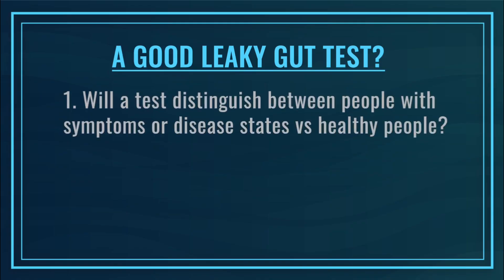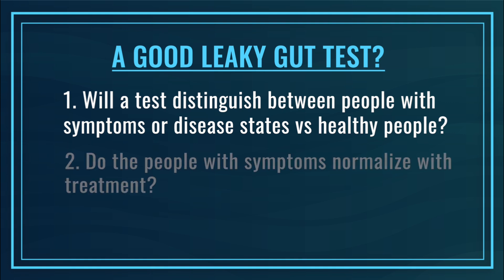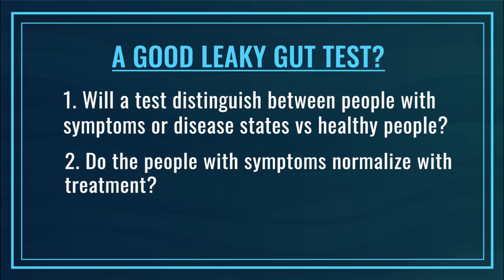As we wade into this discussion, it is important to define how we assign whether a test is accurate or not. Because sadly, just because a lab offers a test and it might look really official, it doesn't mean that due scientific investigation has been performed to confirm its accuracy. One way we look at this is: will a test distinguish between people with symptoms or disease states versus healthy controls? Another way is: do people with symptoms, when treated, see improvements that correlate with the lab marker also improving? And third, are there valid normal ranges?